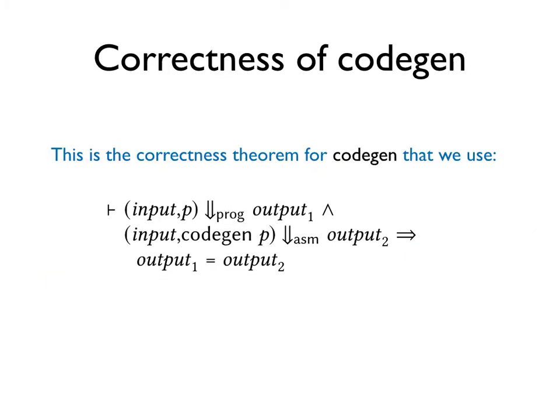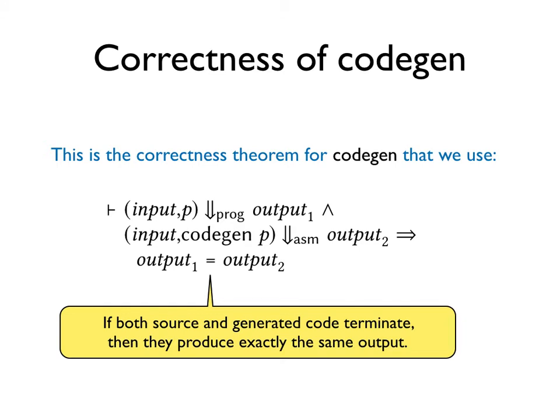Equipped with a semantics judgement for source and target, we can state what it means for our code gen function to be correct. This theorem can be read as saying, if both source and generated assembly code terminate, then they produce exactly the same output. There are other more general ways of phrasing compiler correctness, but this simple statement will do for our purposes here.